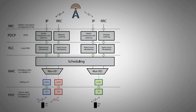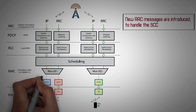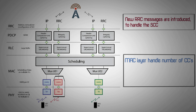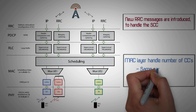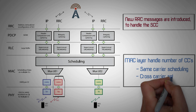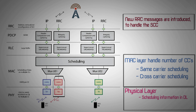Introduction of carrier aggregation introduces new messages in the protocol layer. Some new RRC messages are introduced to handle the SCC. MAC must be able to handle scheduling on a number of component carriers. There are two main alternatives for carrier aggregation scheduling: either resources are scheduled on the same carrier as the grant is received, or cross-carrier scheduling may be used. In the physical layer, signaling information about scheduling on component carriers must be provided in downlink, and HARQ-ACK per component carrier must be delivered in uplink and downlink.